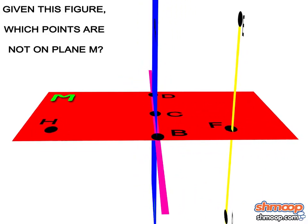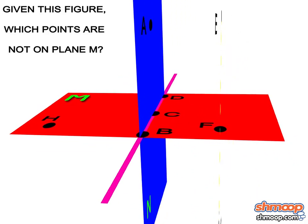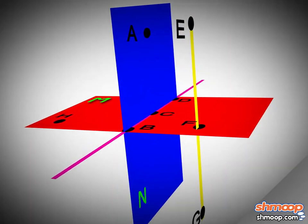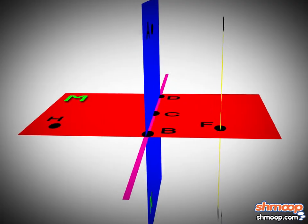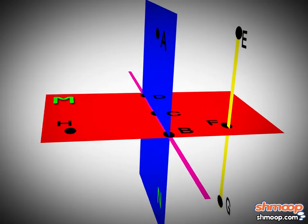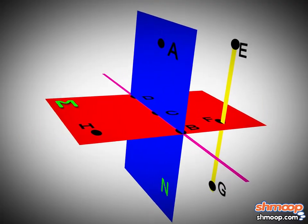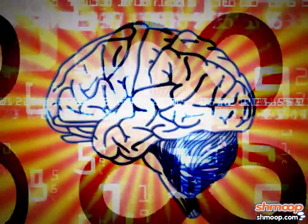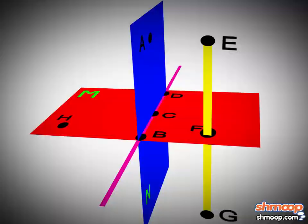If a point is on a plane, we usually draw it within the boundaries of the plane. These boundaries aren't real, of course, since planes go on forever. But drawing those boundaries spares our brains from trying to visualize infinity. The points that are on plane M are H, B, C, D, and F,